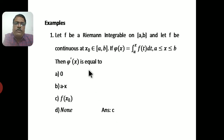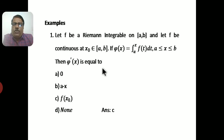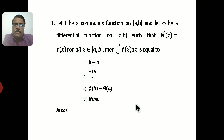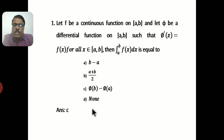Next, some problems. Let f be a Riemann integrable function on [a, b] and continuous at x₀ ∈ [a, b]. If φ(x) = integral from a to x of f(t) dt, then φ′(x₀) equals — the answer is option C, that is f(x₀). Also: if f is continuous on [a, b] and φ′(x) = f(x) for all x ∈ [a, b], then the integral from a to b of f(x) dx equals φ(b) − φ(a), which is option C.